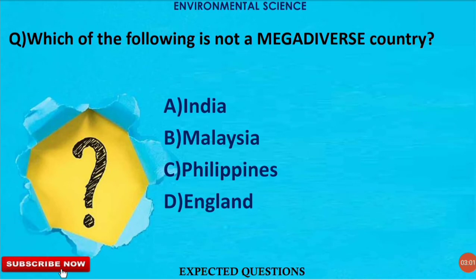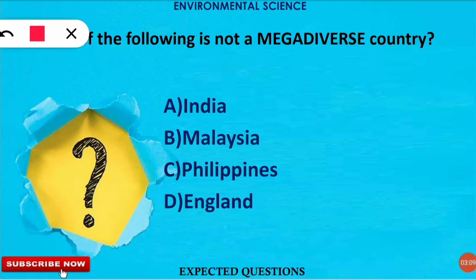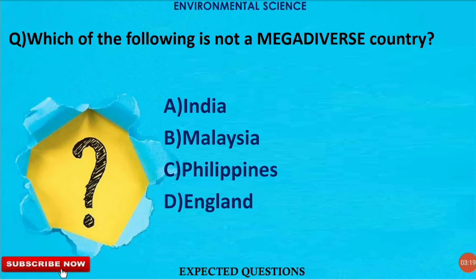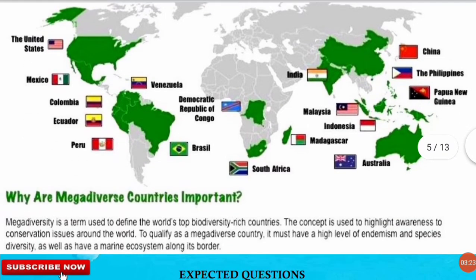The next question is: which of the following is not a mega-diverse country? The correct option is option D — England. If you know which are the mega-diverse countries, you will be able to identify which is not. Let's move to the next slide to learn about the 17 mega-diverse nations.